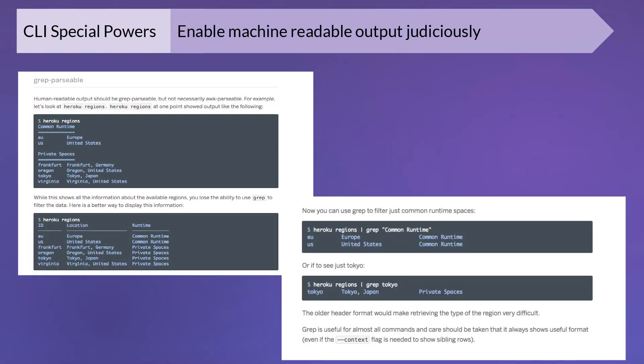Last, CLI special powers — I'll talk about one example. On the left you can see the output you used to get when you ran 'heroku regions': two lists of regions — common runtime ones and private spaces ones. It was easy to read, but it wasn't a table, which meant you couldn't run grep on it. So we changed the output: we added a column for the runtime and made it a table, and now you can filter using grep. For some commands where you have hundreds of things, being able to filter using the CLI gives you the power to create a filtered list — something you can't do in the dashboard.